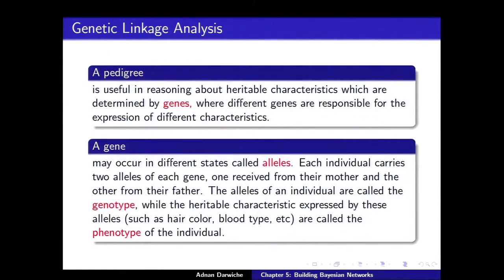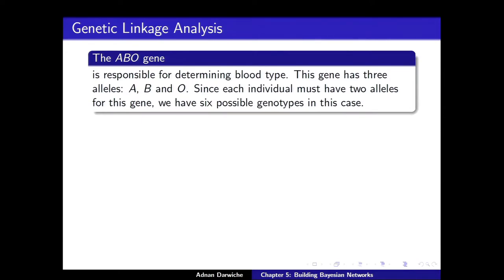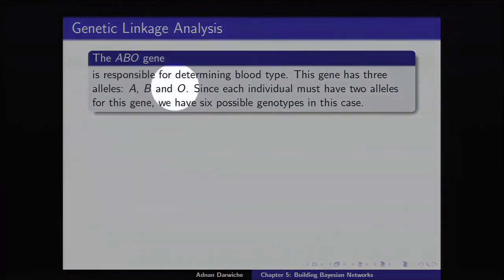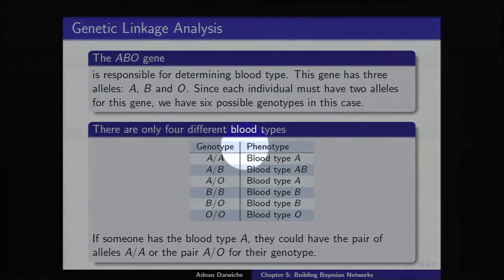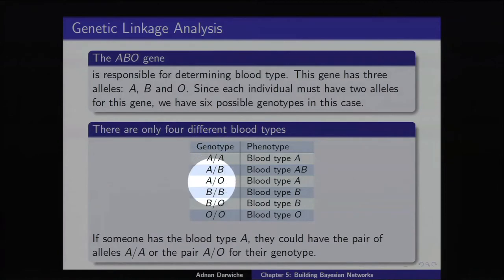Think of cause and effect: the genotype causes the phenotype. For example, the ABO gene determines blood type. The alleles are A, B, and O — three of them — leading to six possible genotypes (order does not matter). There are six genotypes and the corresponding phenotype: AA, AB, and so on. Multiple genotypes can lead to the same phenotype — blood type A could be either alleles AA or AO.